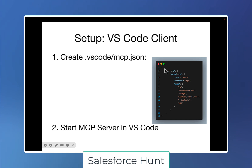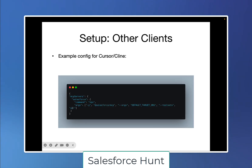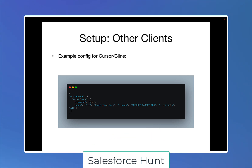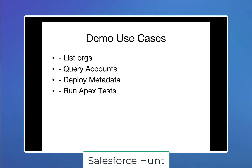In upcoming videos, you'll see my configuration for Cursor and Slain IDEs — I already posted configurations and GIF images on LinkedIn. You can reach out there for Cursor and Slain configurations. It's very simple — just create your configuration file inside the Cursor or Slain IDE. We have already seen demos of: list of orgs, query accounts, deploy metadata, and run test class.